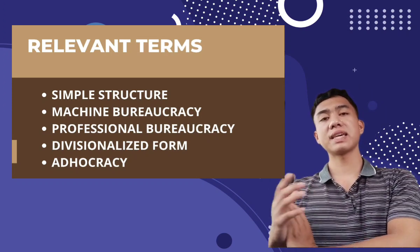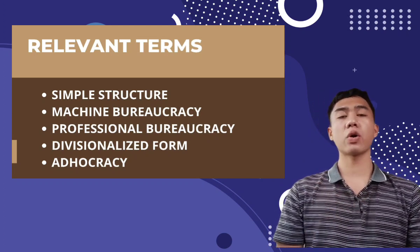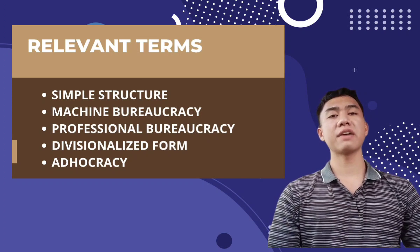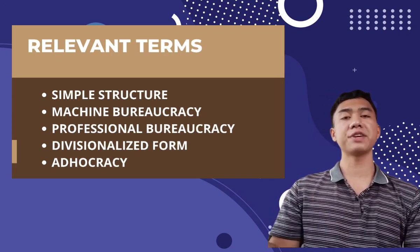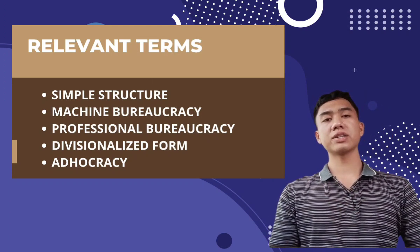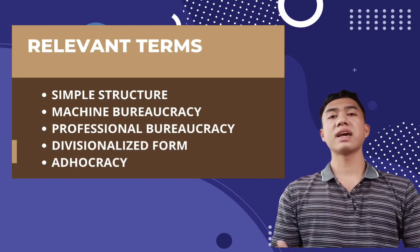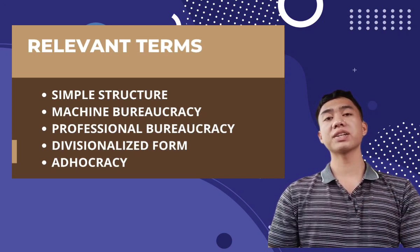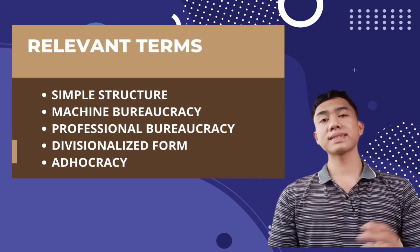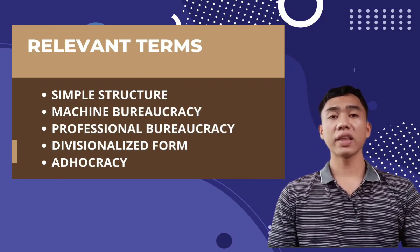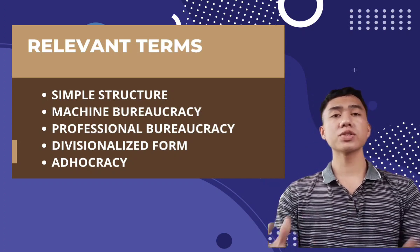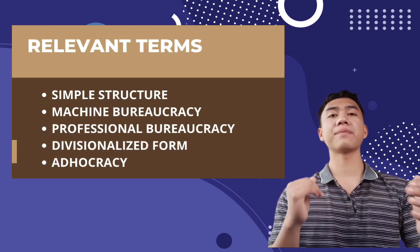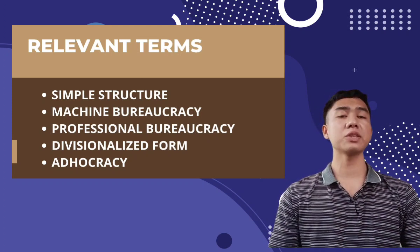The divisionalized form has the middle line as its key part. It uses the standardization of output as its prime coordinating mechanism and employs limited vertical decentralization. Decision-making is decentralized at the divisional level, and there is little coordination among separate divisions. Corporate-level personnel provide some coordination; thus, each division itself is relatively centralized and tends to resemble a machine bureaucracy. The technostructure is located at corporate headquarters to provide services to all divisions, and support staff is located within each division. Large corporations are likely to adopt the divisionalized form.